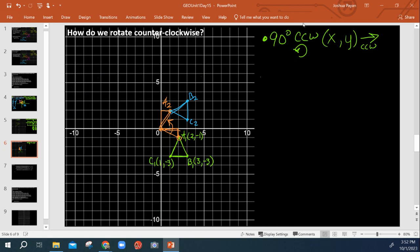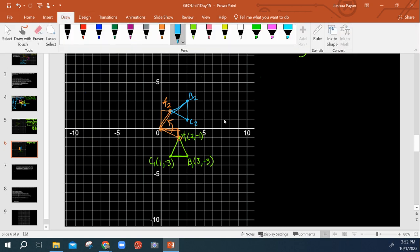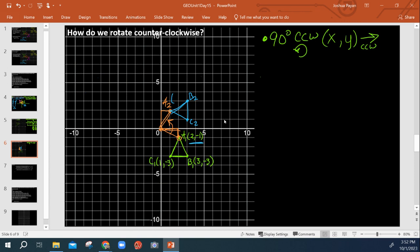Okay, let's see. So starting with vertex A, we go from 2 by negative 1 to 1 by positive 2.